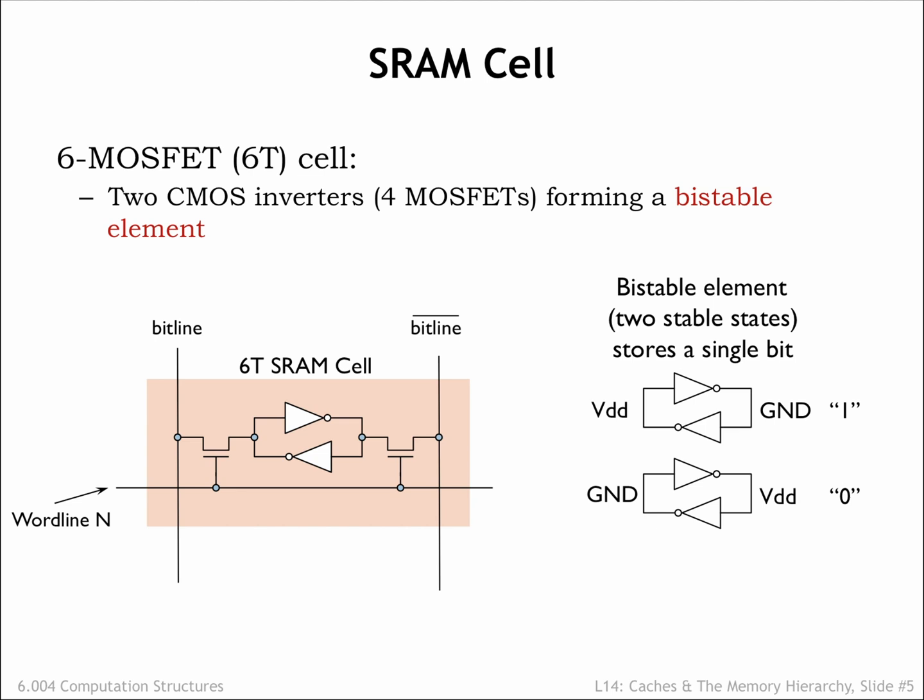Both sides of the feedback loop are connected via access FETs to the two vertical bit lines. When the word line connected to the gates of the access FETs is high, the FETs are on — in other words they will make an electrical connection between the cell's internal circuitry and the bit lines. When the word line is low, the access FETs are off, and the bistable feedback loop is isolated from the bit lines and will happily maintain the stored value as long as there's power.